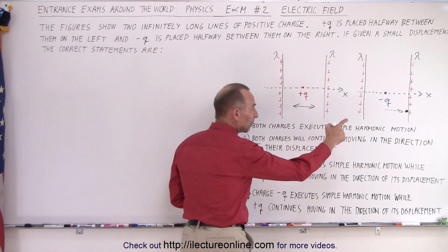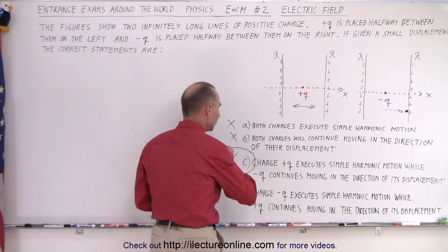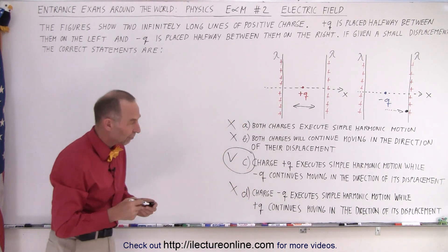Charge negative Q executes simple harmonic motion - that's not correct. And so you can see that C is the only correct answer of the four.